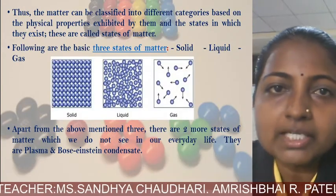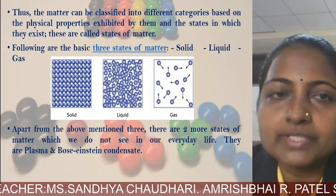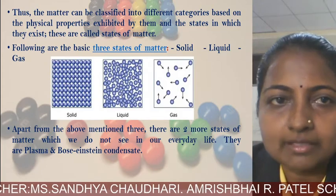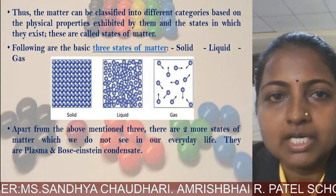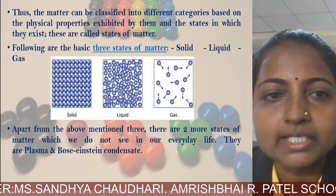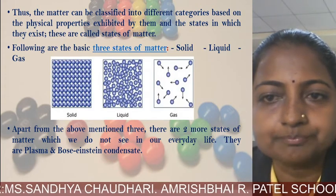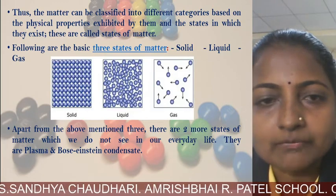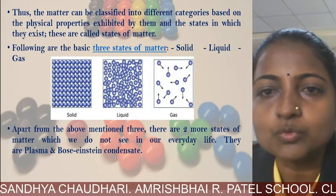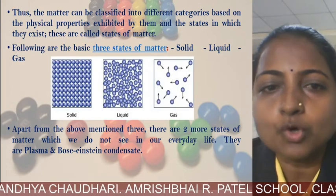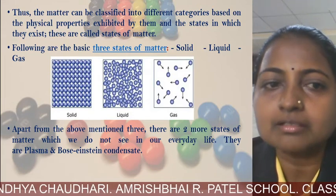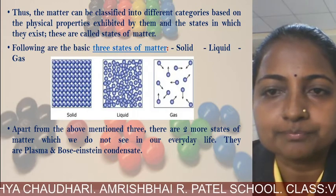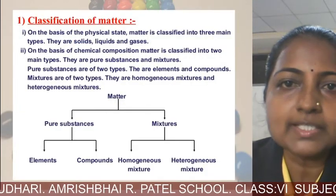Matter can be classified into different categories based on the physical properties exhibited by them — the states in which they exist are called states of matter. In the figure you can see solid state, liquid state, and gaseous state with the arrangement of atoms. Apart from these three, there are two more states of matter not seen in everyday life: plasma state and Bose-Einstein condensate.